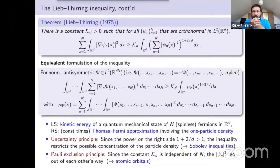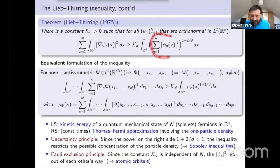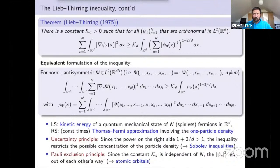The Lieb-Thirring inequality captures two fundamental principles of quantum mechanics: the uncertainty principle and the Pauli exclusion principle. The uncertainty principle manifests because ψ squared as a probability density raised to a power bigger than 1 having a finite integral means this density cannot concentrate too much on small sets.